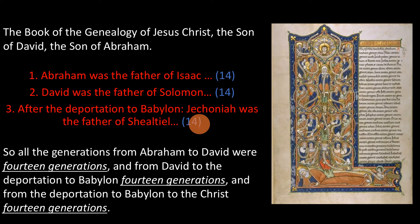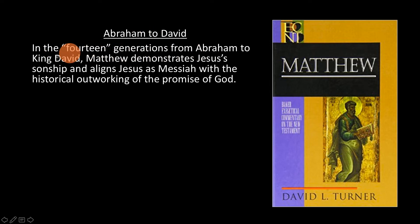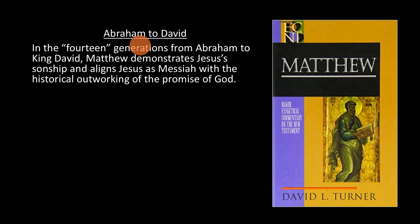So the question is, why has Matthew laid out his genealogy in this fashion? An answer is provided by David L. Turner in his commentary. He notes that the reason for going from Abraham to David is this: in the 14 generations from Abraham to King David, Matthew demonstrates Jesus' sonship and aligns Jesus as Messiah with the historical outworking of the promise of God. The reason he goes from Abraham to David is because of messianic reasons — David is of course associated with the Christ.